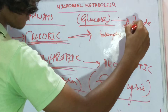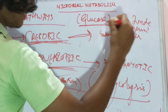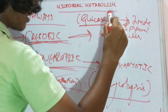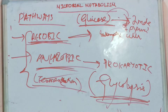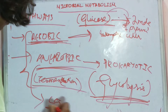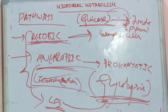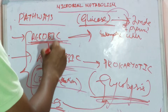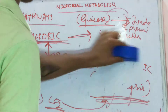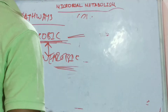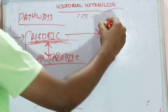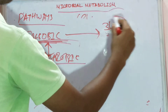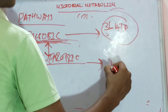Both aerobic and anaerobic respiration start with glucose. In aerobic respiration, glucose ends up as two moles of pyruvate through the process of glycolysis. In fermentation or anaerobic respiration, it ends up forming CO2 through glycolysis. The difference in energy yield is significant: aerobic respiration releases 36 ATP molecules, while anaerobic respiration releases only 2 ATP molecules.